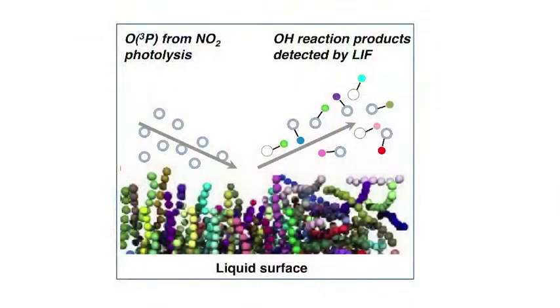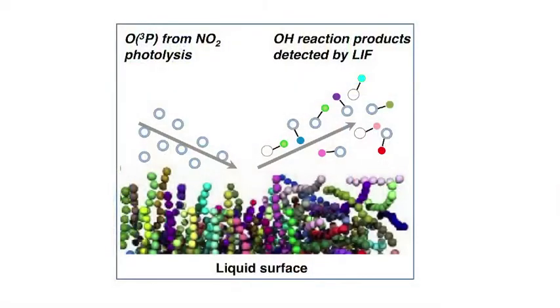What makes our method different — what we think is unique — is that we use a chemically specific probe where the projectile that we fire undergoes a chemical reaction with only selected groups at the surface of the liquid. This is illustrated in the graphical abstract in our paper, and so the products that escape into the gas phase are a signature of what was present at the liquid surface.